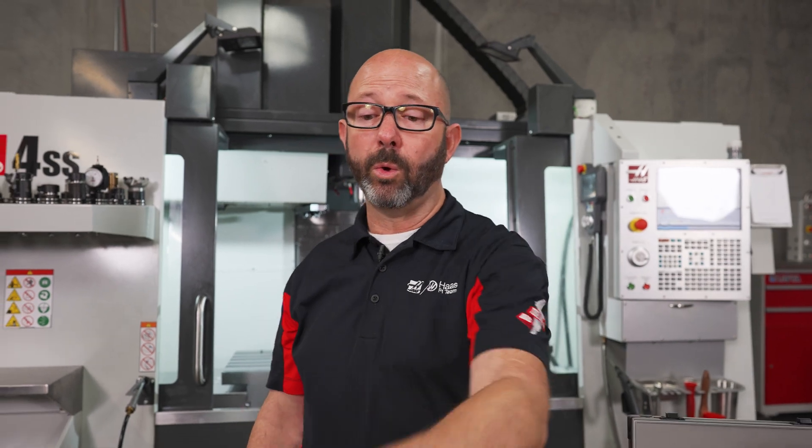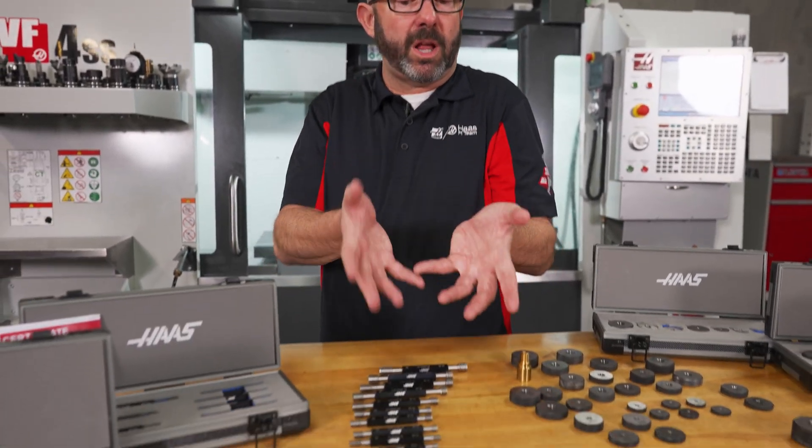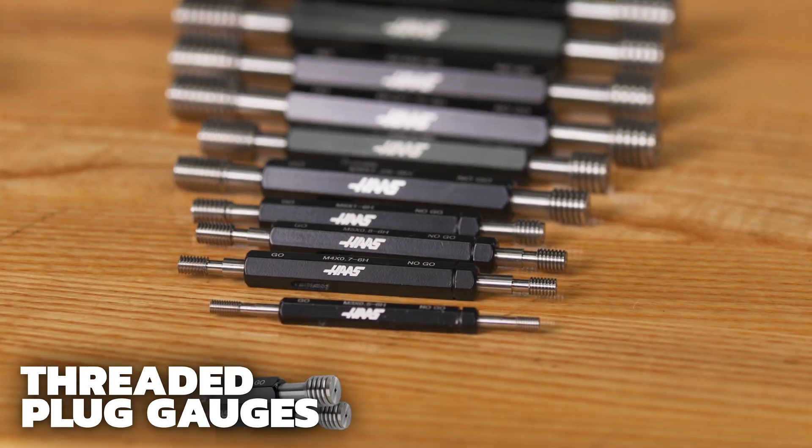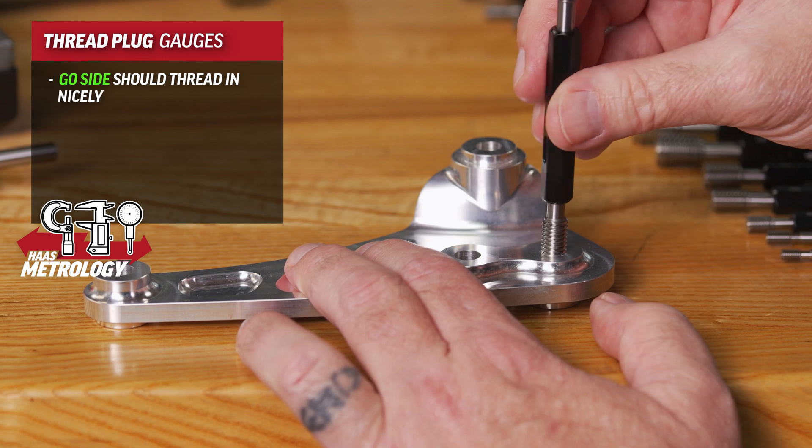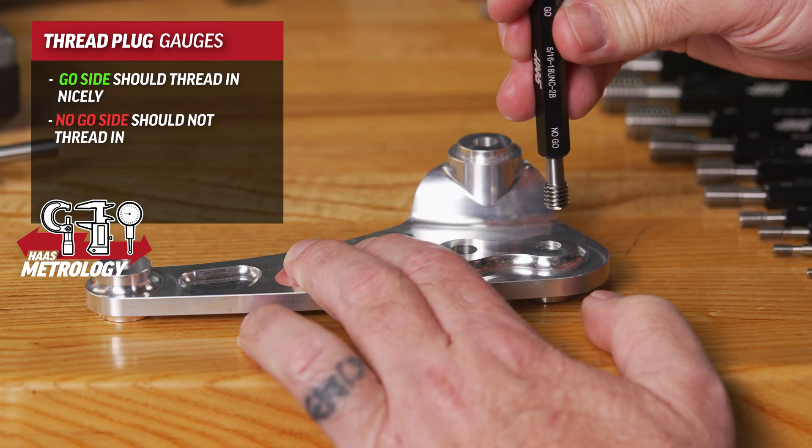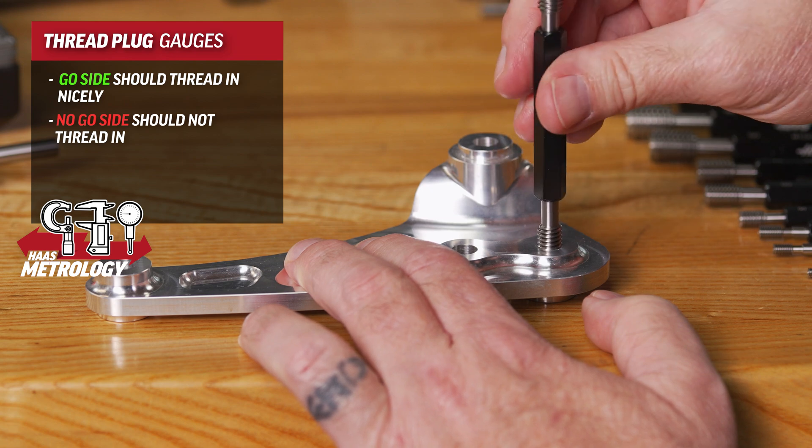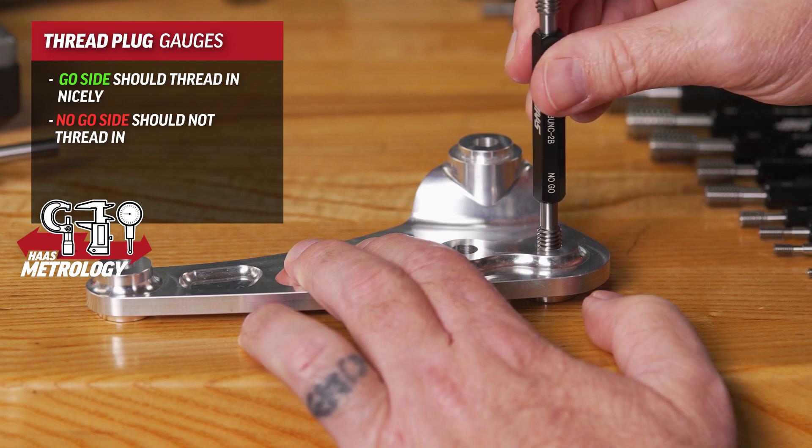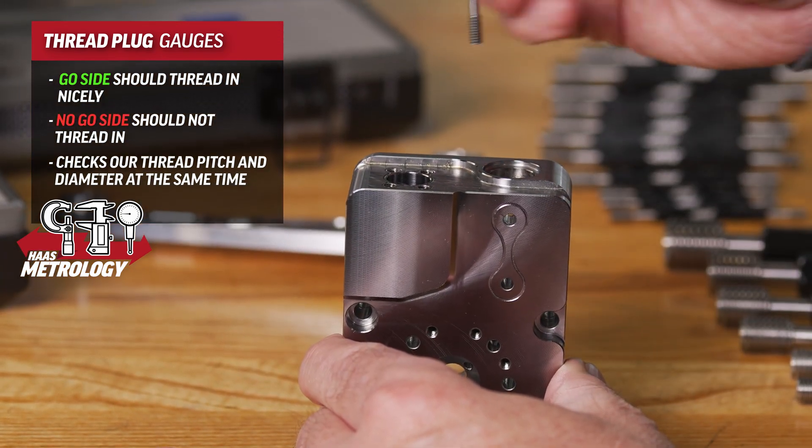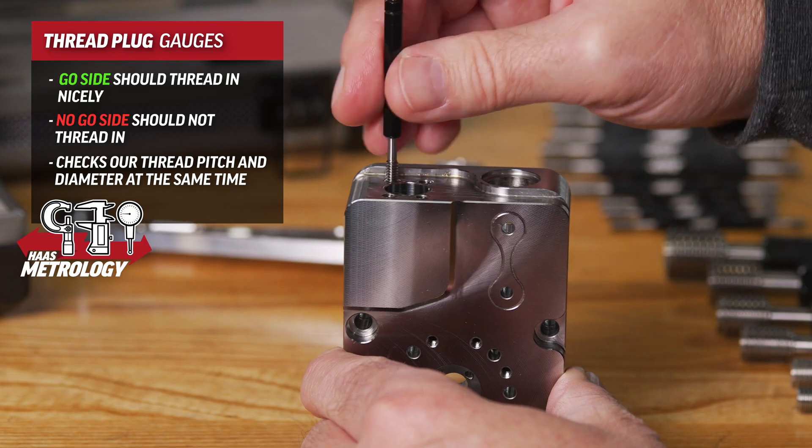For threaded holes, we can use threaded plug gauges to make sure that all of our internal threaded features are correct. Again, we have a precision ground go side which should thread in nicely, and a precision ground no-go side which should not thread in. These gauges are checking our thread pitch, our thread lead, and our pitch diameter all at one time.